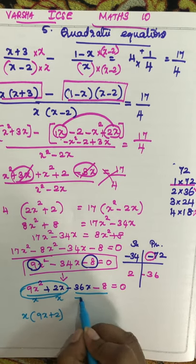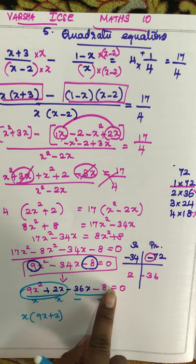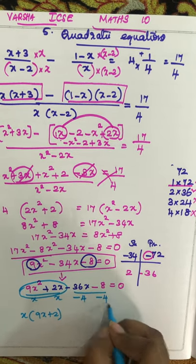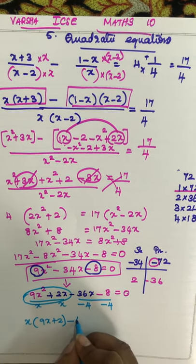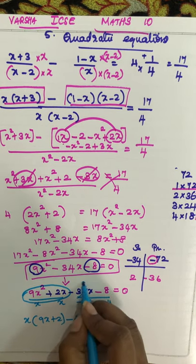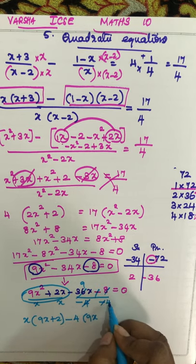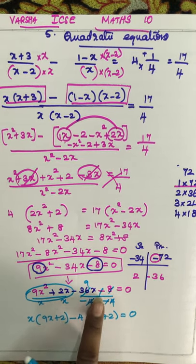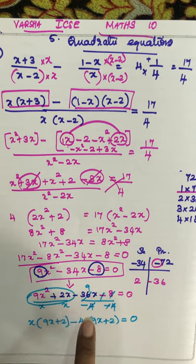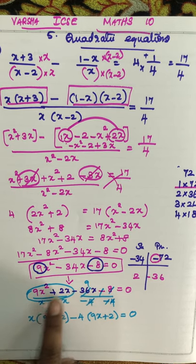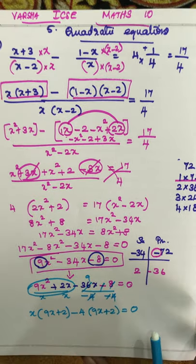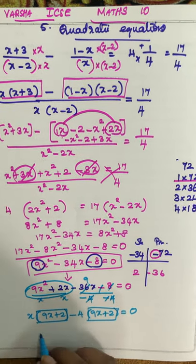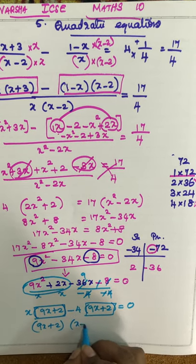Here you can divide by minus 4 — so this gives 9x plus 2. Many students, when taking as common, commit a mistake here. The term you take as common, you just divide — definitely you won't commit a mistake. This is very simple. Now: 9x plus 2 and 9x plus 2 — you take 9x plus 2 as common, and this gives x minus 4 equal to 0.